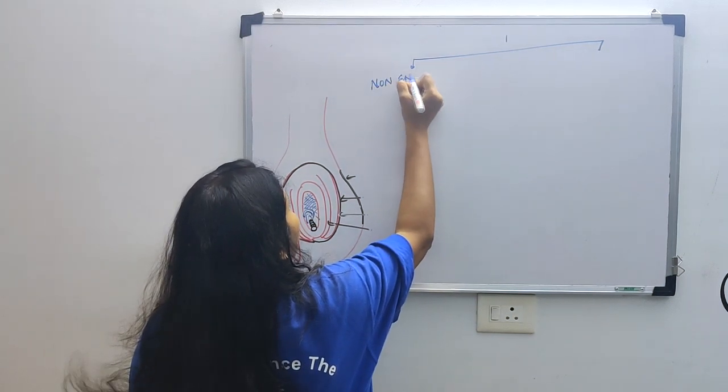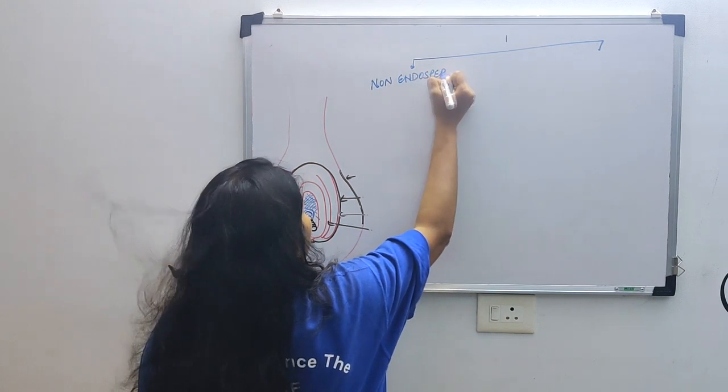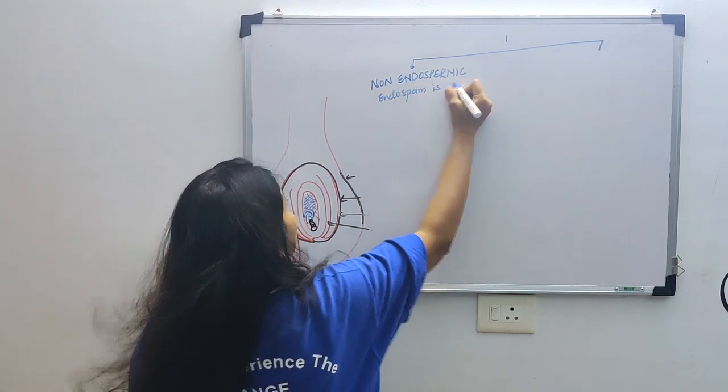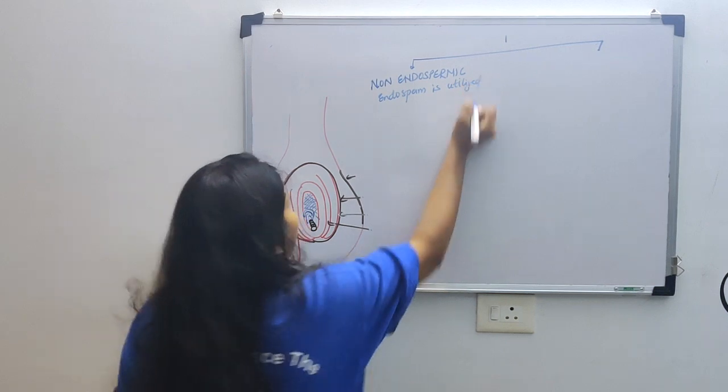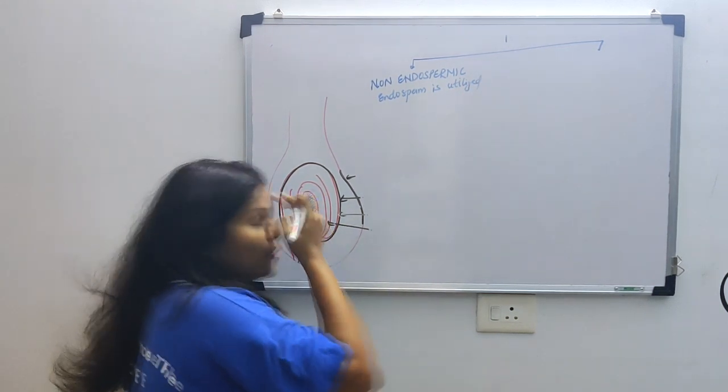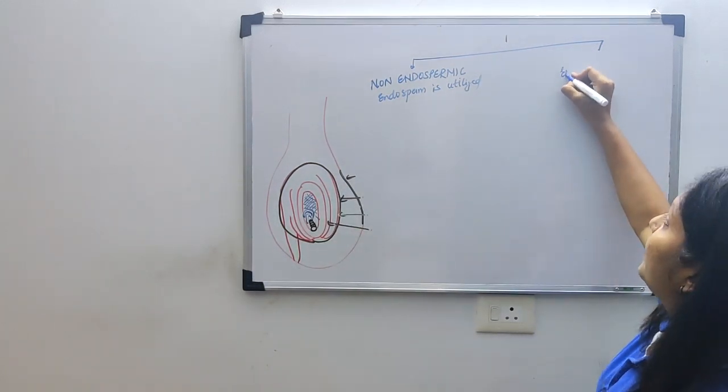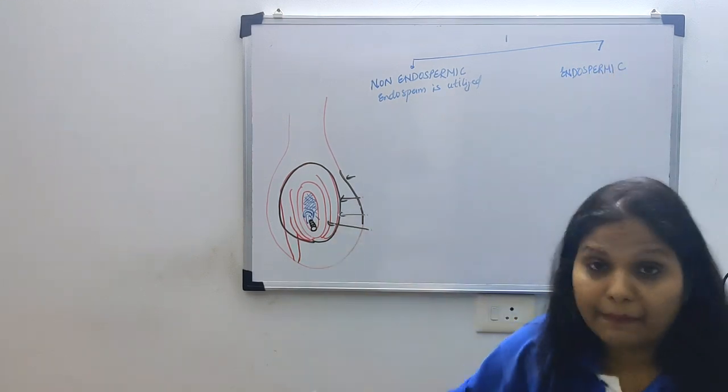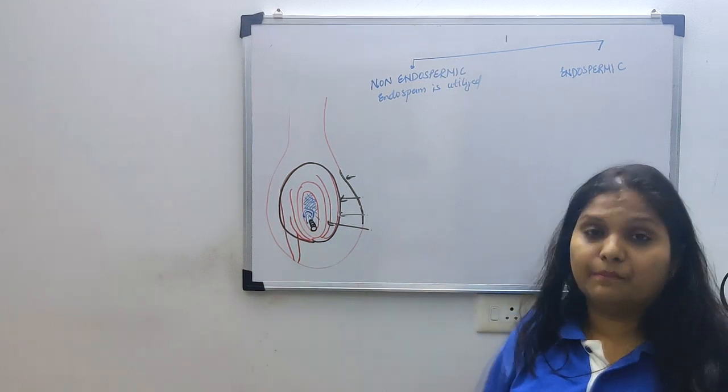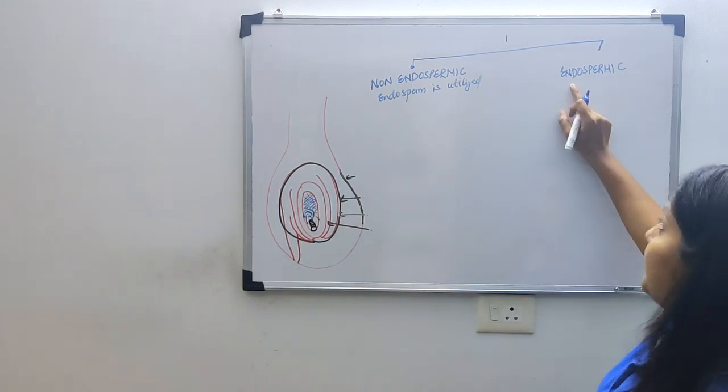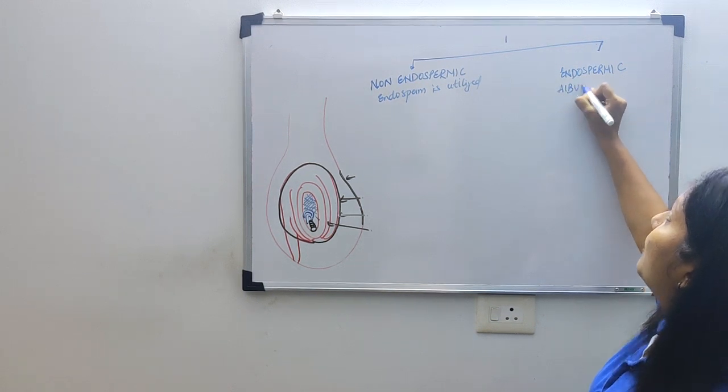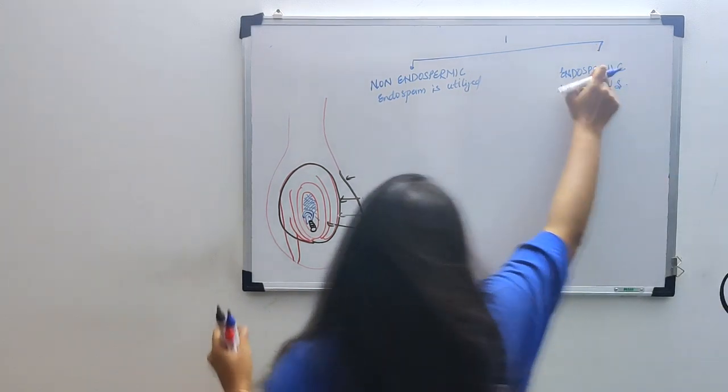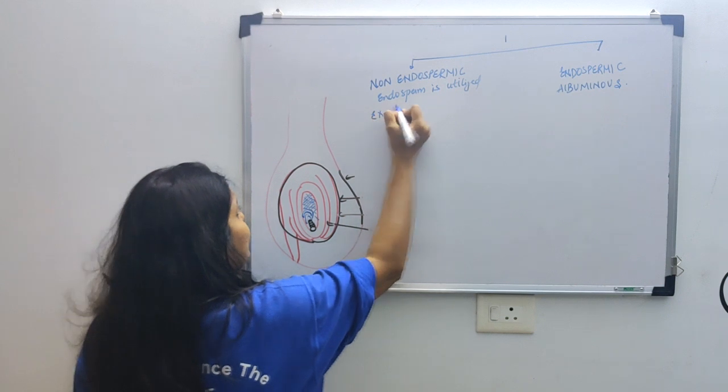As the embryo is developing, you will see there are two types of seeds. One type of seed we will call non-endospermic seed. What is non-endospermic seed? Endosperm is completely utilized. In non-endospermic, endosperm will not remain. But then there is another category which we will call endospermic. In endospermic, you will see that even though embryo development has taken place, still some endosperm will remain.